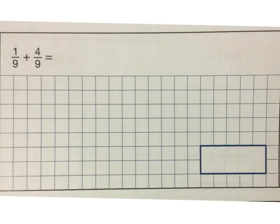In this problem again, the denominator is the same with them both being ninths. So 1 ninth add 4 ninths equals 5 ninths.